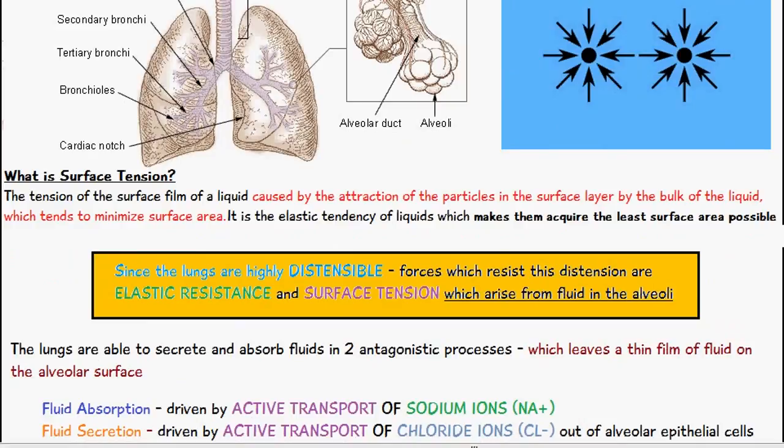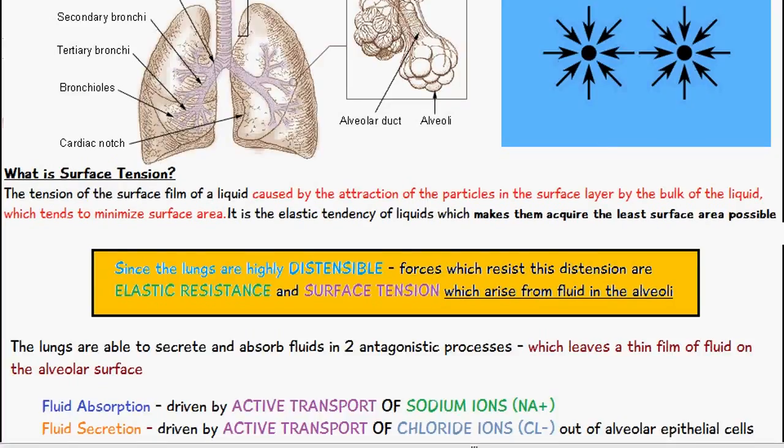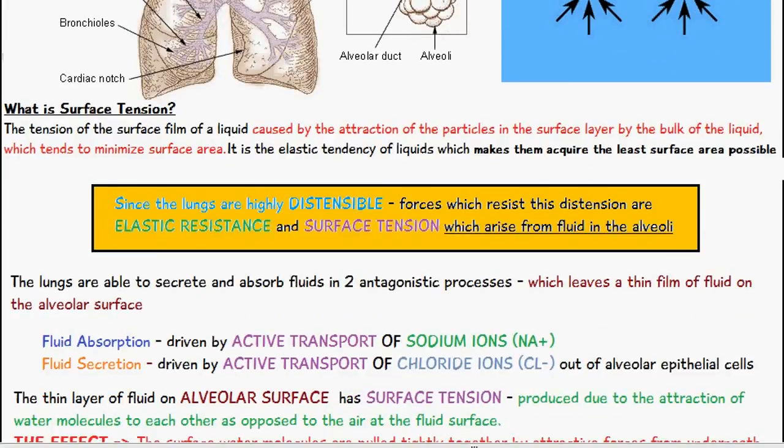The lungs are able to secrete and absorb fluids in two antagonistic processes, and the overall effect of these two methods is to leave a thin film of fluid on the alveolar surface. The two mechanisms are fluid absorption and fluid secretion.